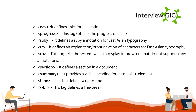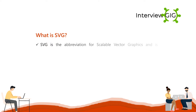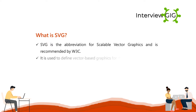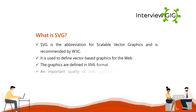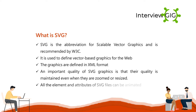What is SVG? SVG is the abbreviation for Scalable Vector Graphics and is recommended by W3C. It is used to define vector-based graphics for the web. The graphics are defined in XML format. An important quality of SVG graphics is that their quality is maintained even when they are zoomed or resized. All elements and attributes of SVG files can be animated.